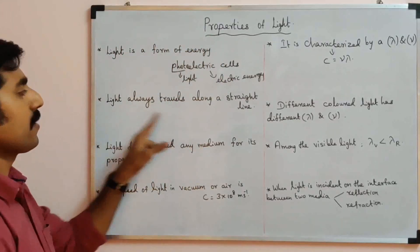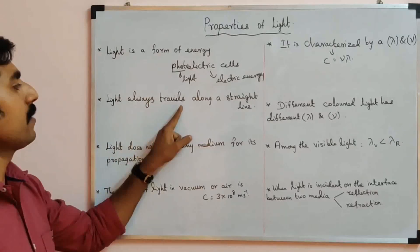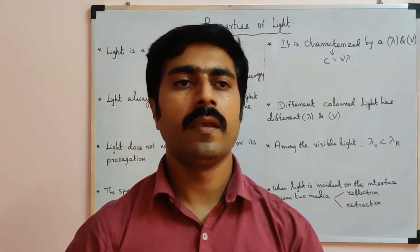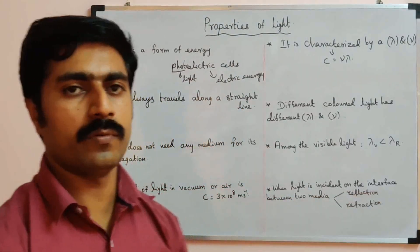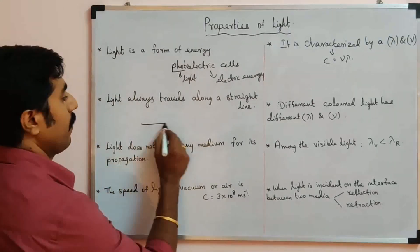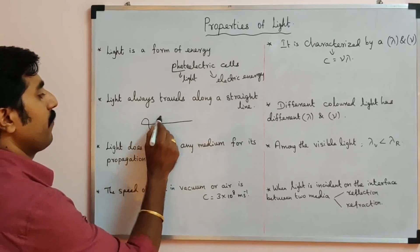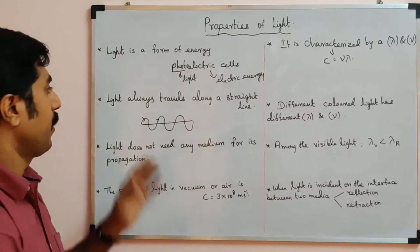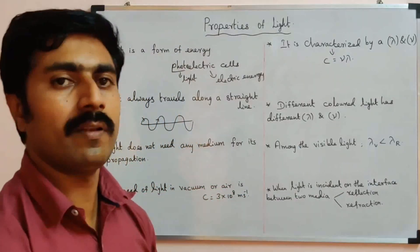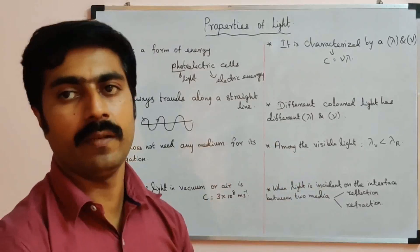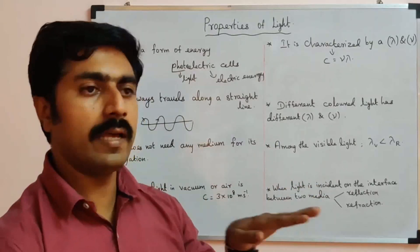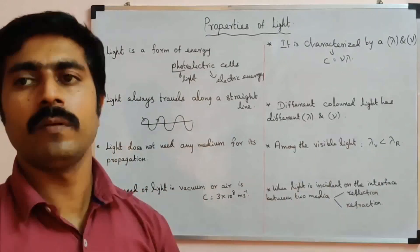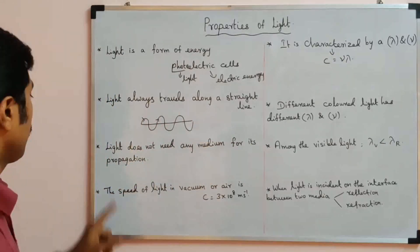The second property: light always travels along a straight line, in the form of a wave. Light travels in a straight line with the same speed in air or vacuum.